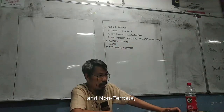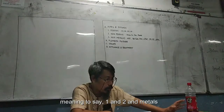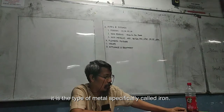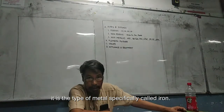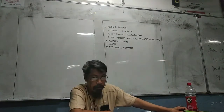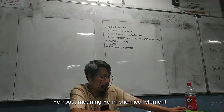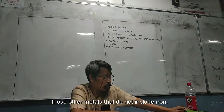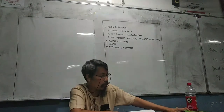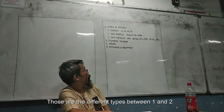The three classifications are: ferrous, non-ferrous, and number 3, non-metallic. So numbers 1 and 2 are metals. Number 1 is metal specifically called iron — ferrous meaning Fe, the typical element iron. Non-ferrous refers to those other metals that do not include iron. Those are the differences between 1 and 2.